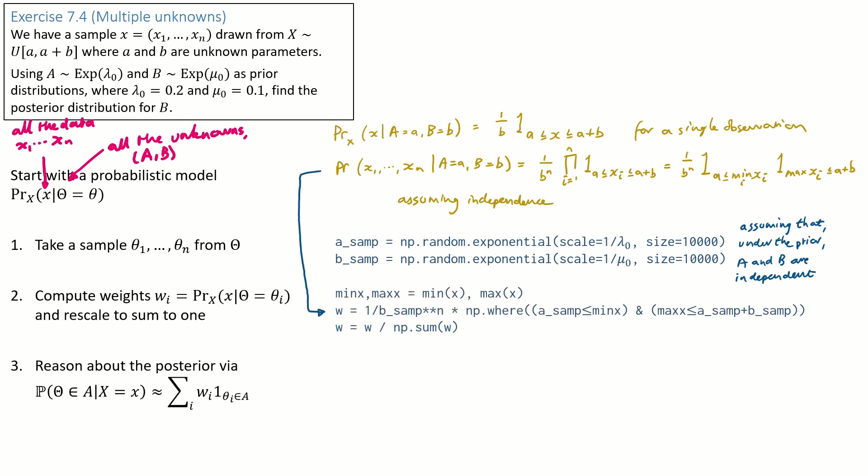The next step is to compute weights by evaluating the data likelihood function. There's nothing to it really, it's just a matter of turning our likelihood function into code, then evaluating it for each one of our AB samples. This code uses numpy vectorised operations, and you should look at it very closely to make sure you see that W is a vector.